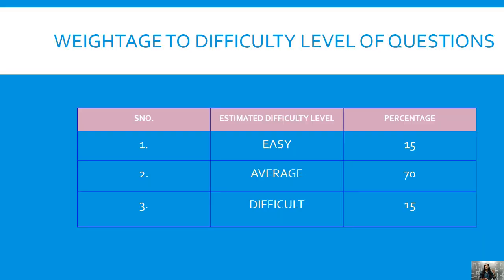Weightage to difficulty level of questions: every question paper is made in a way that it is difficult to score but easy to pass. Basically there are 3 types of questions — easy, average and difficult. There are 15% easy questions, 70% average and only 15% difficult. Now, weightage to physics chapters will be explained by Mr. Pankaj.